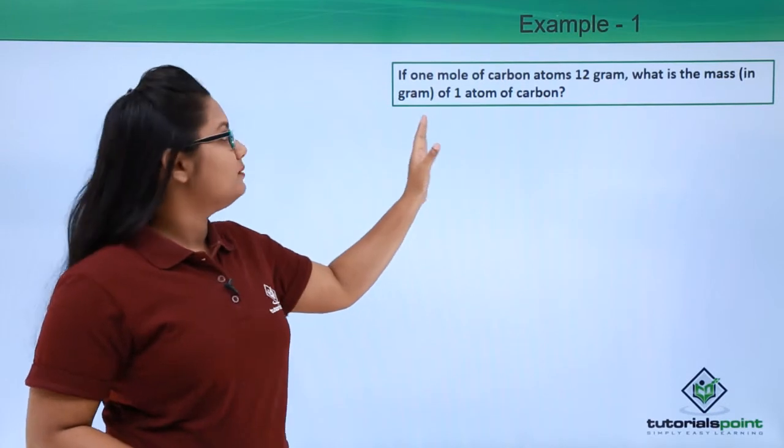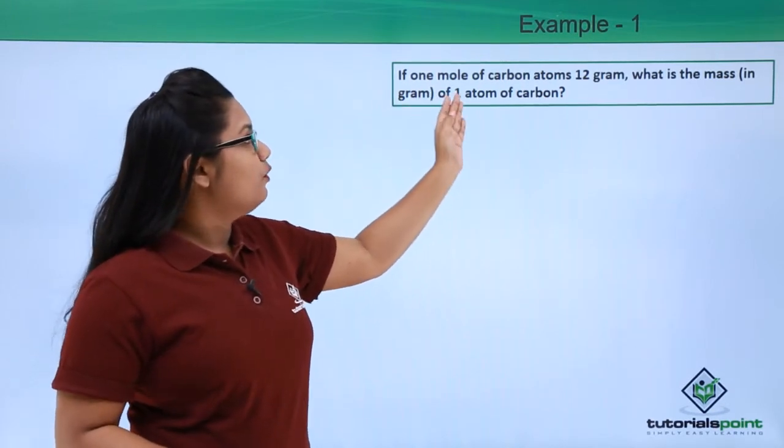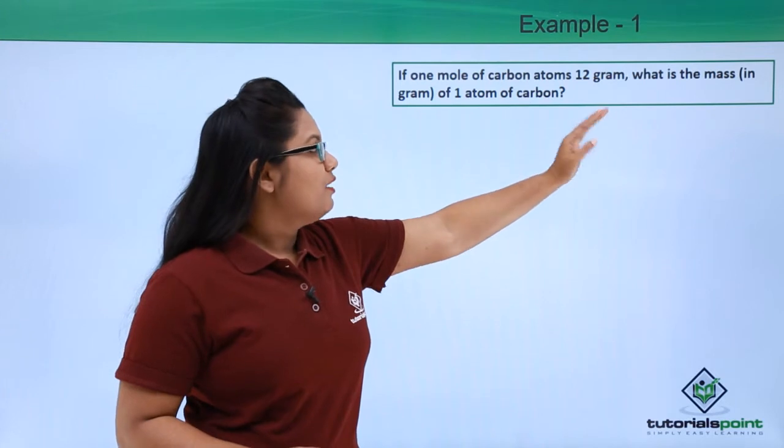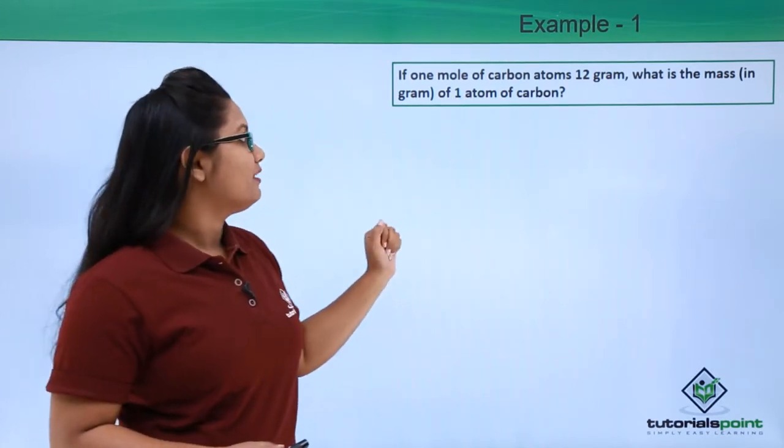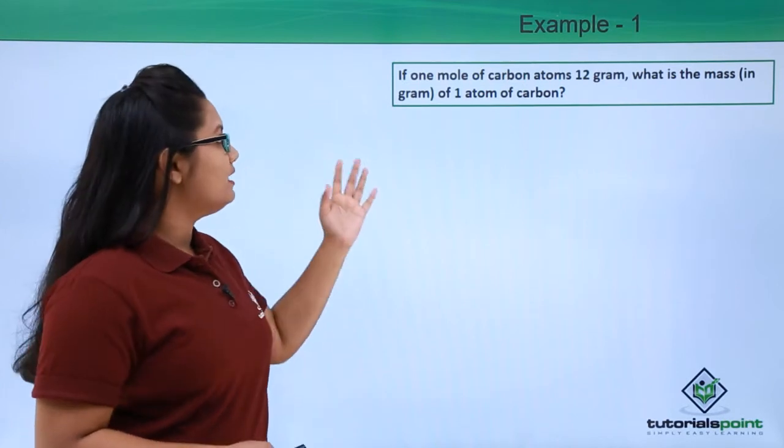Now here is the first problem: if one mole of carbon weighs 12 grams, what is the mass of one atom of carbon in grams? Let's find out.